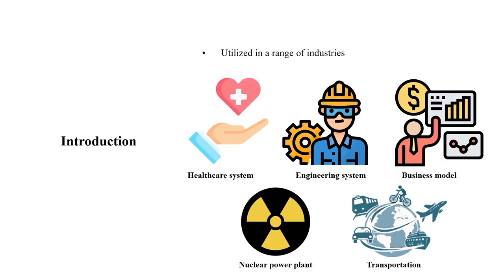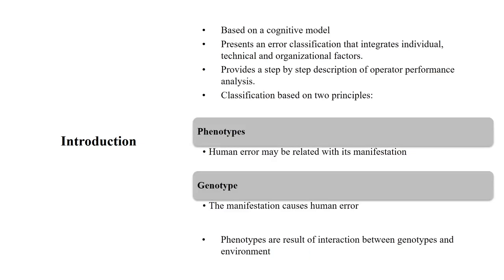CREAM can be used in healthcare systems, engineering systems, business models, nuclear power plants, and any kind of transportation such as aviation, railway, and road transport. The whole method is based on a cognitive model. It presents an error classification that integrates individual, technical, and organizational factors, and also provides a step-by-step description of operator performance analysis.